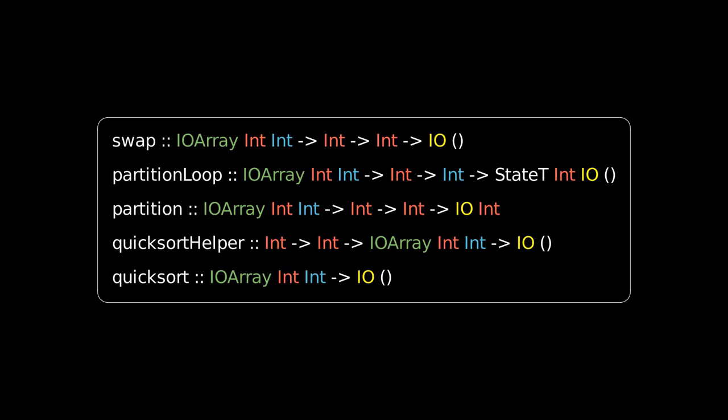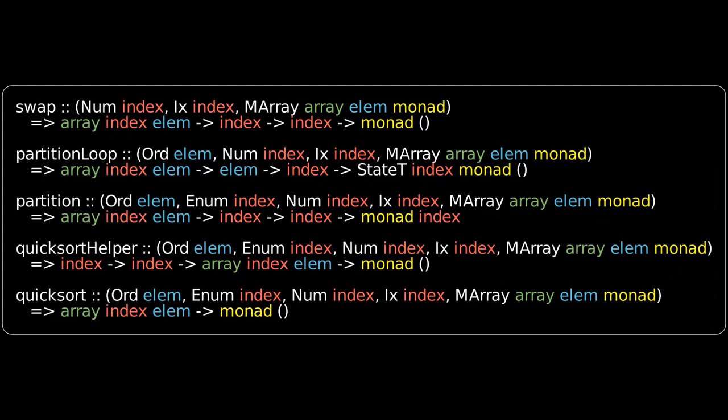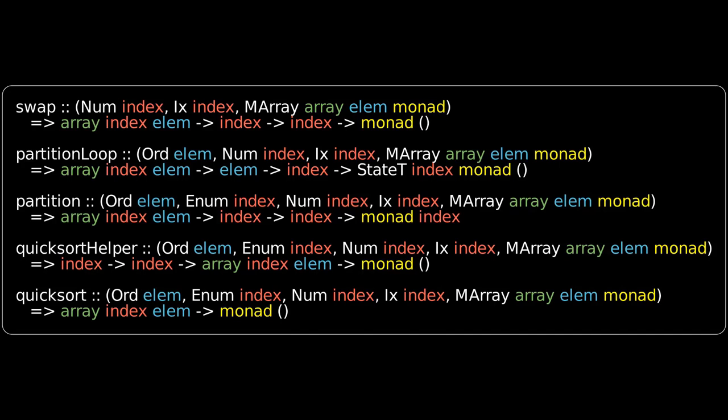These are our five type signatures, but they're all specialized to use IO array specifically. But in a lot of cases, we don't want to force our user to be in the IO monad. This is why we have the M array type class interface. This is what it looks like when we change our type signatures to accommodate any M array. Notice we introduce the M array constraint as well as many constraints on the particular index type we'll use. Any one of Haskell's integral types will satisfy these constraints. But overall, nothing will really change with the code itself.